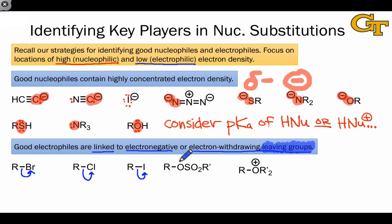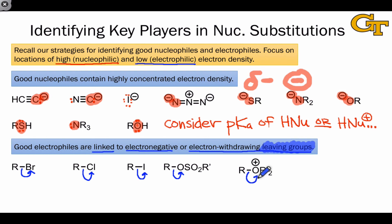In a future video, we're going to take a look at sulfonate leaving groups, which are quality leaving groups because what departs resembles sulfate — an extremely stable conjugate base. Keep in mind that leaving groups need not be neutral. Positively charged leaving groups generally have a strong desire to depart with a pair of electrons, leaving behind a neutral fragment — in this case, the very stable neutral molecule OR'₂.